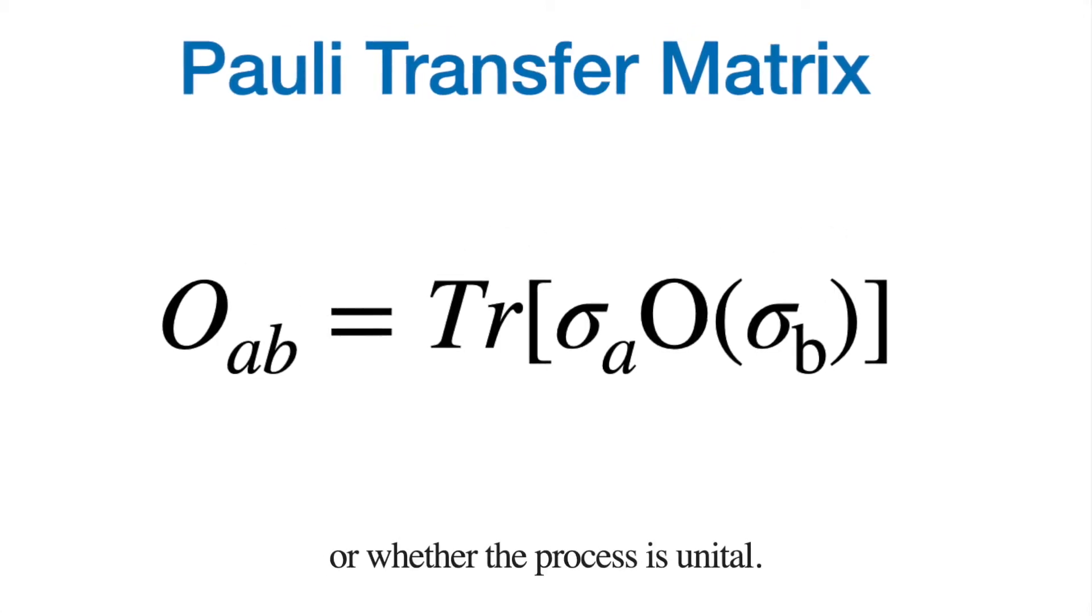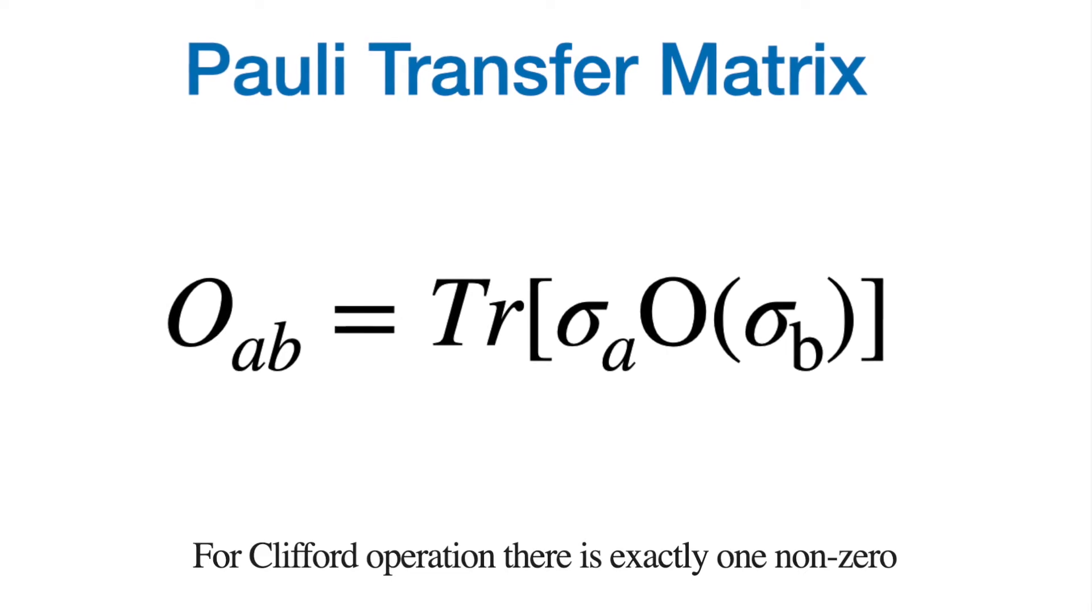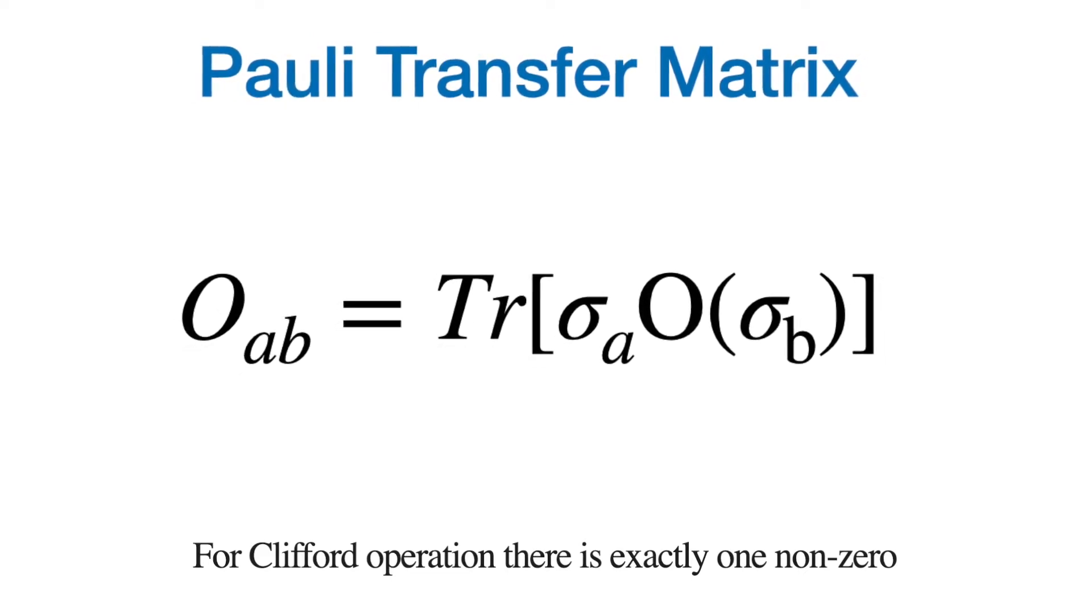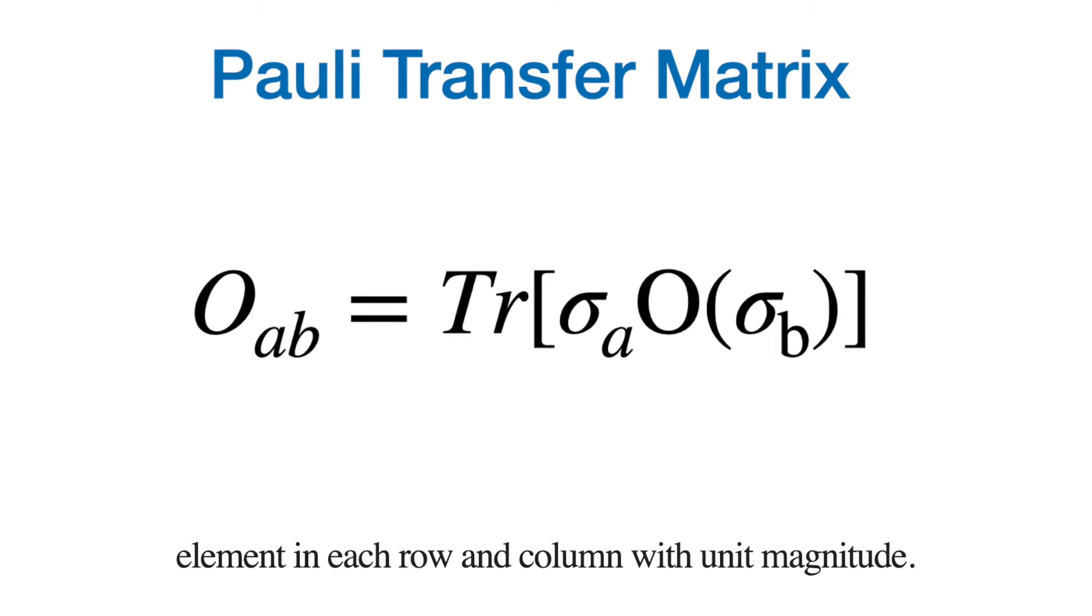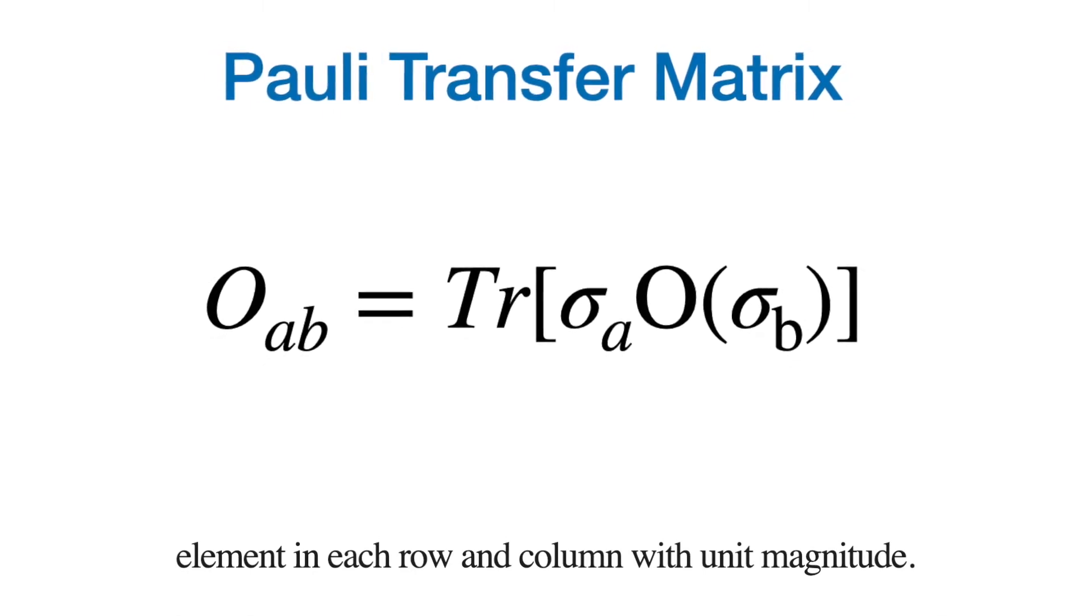For Clifford operation, there is exactly one non-zero element in each row and column with unit magnitude.